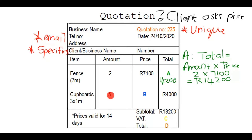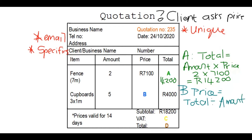Next we look at cupboards — there are five of them and we don't know the price per cupboard, but we know the total cost is four thousand rand. To find B, the price per unit, I need to divide the total price by the amount: four thousand divided by five, which gives eight hundred rand. So B is eight hundred rand.